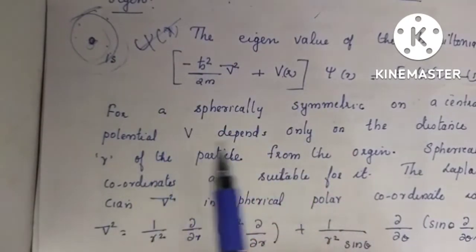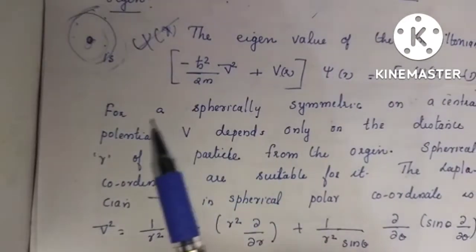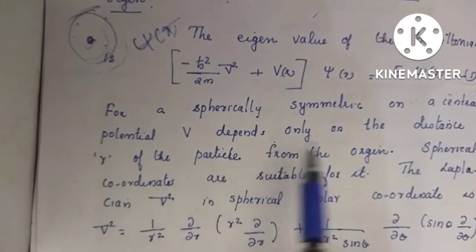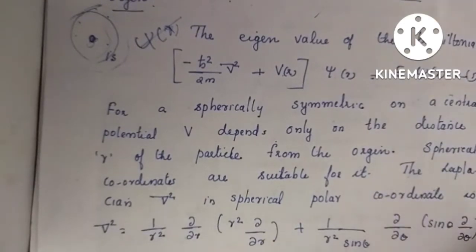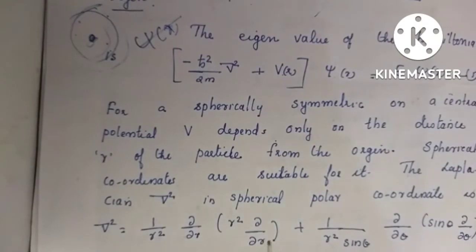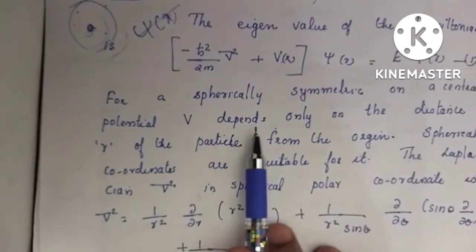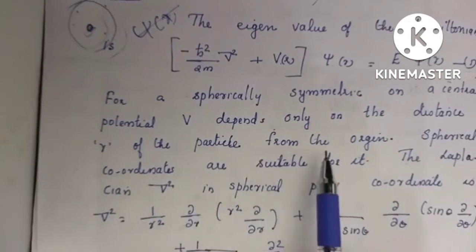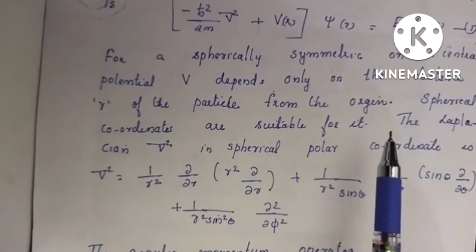For this, one is a spherical axis. We have spherical symmetry. For a spherical symmetric central potential, V depends only on the distance r of the particle from the origin. Spherical coordinates are suitable for it.